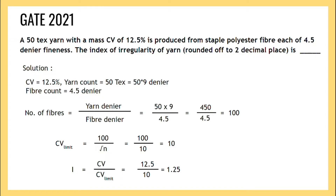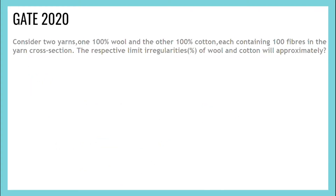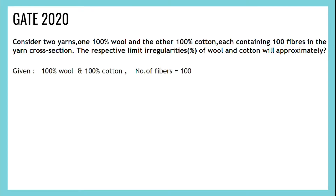Consider two yarns — 100 percent wool and the other 100 percent cotton — each containing 100 fibers in the yarn cross section. The respective limit irregularity percent of wool and cotton will be approximately asked. Given that it is 100 percent wool and 100 percent cotton, and the number of fibers is 100.